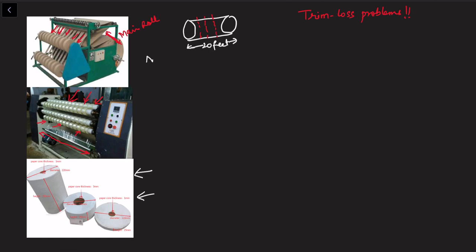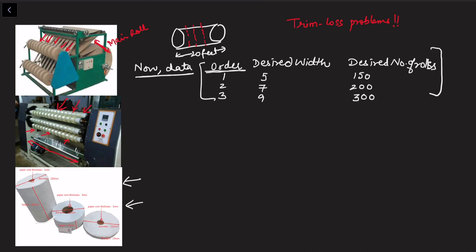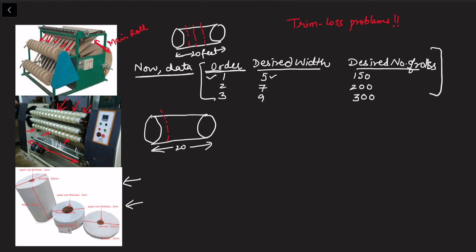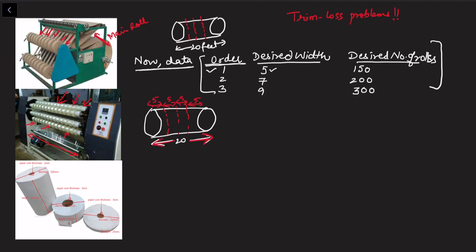Now let's look at the data again. We have three types of orders with desired width and desired number of rolls. Consider the first situation where the desired width is 5 feet. The total width is 20 feet, and if I take a sub-roll of 5 feet, each sub-roll is 5 feet wide. Using this one pattern, how many possible sub-rolls can I cut? Obviously four - for a 20-foot roll I can have four sub-rolls of 5 feet width each.